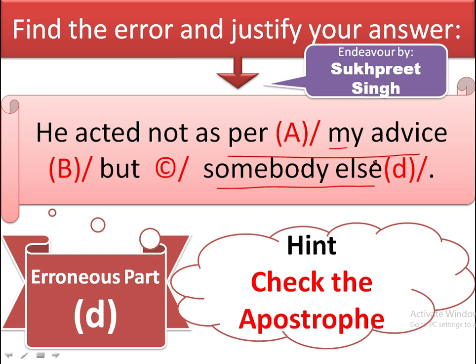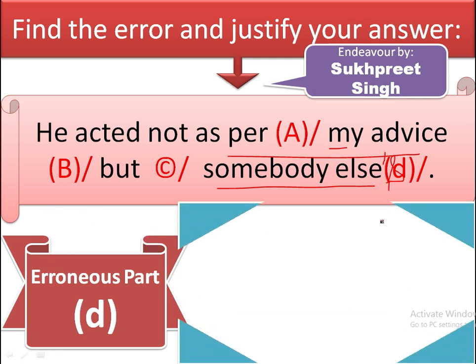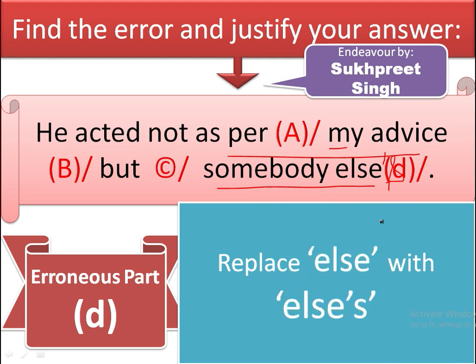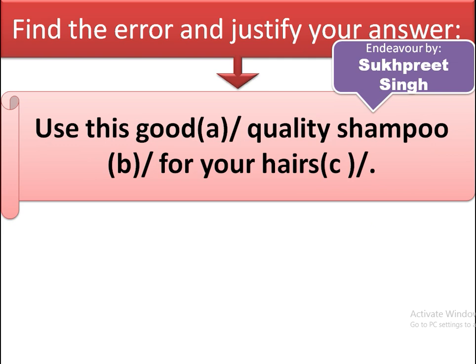You should learn how to use apostrophe-S with 'somebody else.' We are to use it after 'else' — not 'somebody's else' but 'somebody else's.' The apostrophe-S that makes it possessive comes after 'else,' not after 'somebody.' The sentence goes correct when 'somebody else' is replaced by 'somebody else's': 'He acted not as per my advice but somebody else's' — meaning he acted according to the advice given by somebody else. We use apostrophe-S to show possession.